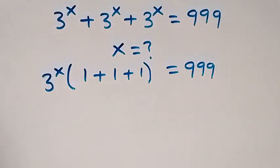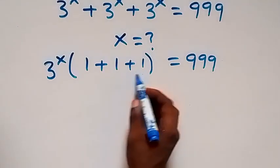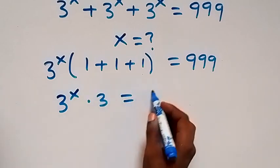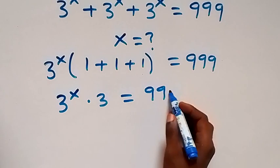Then we have 1 plus 1 plus 1 left which equals to 999 from here. Then in the next step, we have this together so we have 3 raised to the power x times 3 equals to 999 from here.